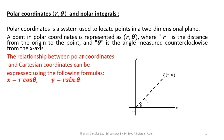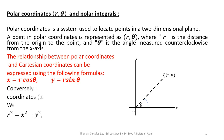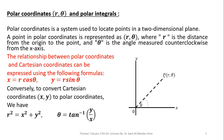Next, these are the transformation equations. In order to convert Cartesian coordinates into polar coordinates, x is equal to R cos theta and y is equal to R sin theta. And for the reverse process, we have R square is equal to x square plus y square, and theta is equal to inverse tangent of y over x.